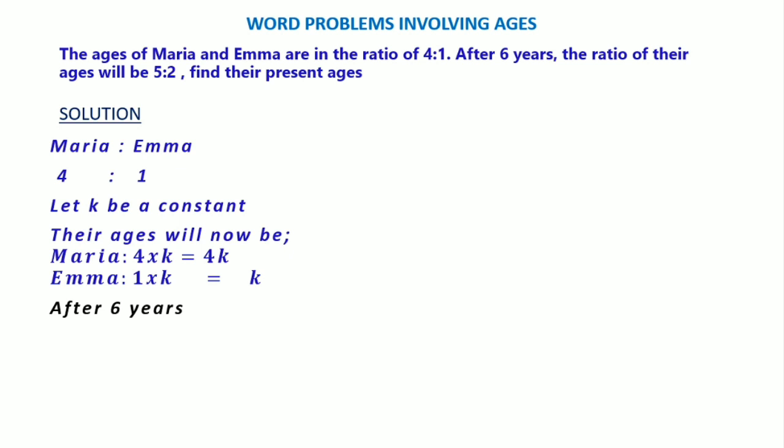Maria will now be 4k plus 6. We have to add 6 to their current ages. Meanwhile, Emma will be k plus 6, because the current age of Emma is k, but after six years we add 6. The ratio now will be 5 to 2.